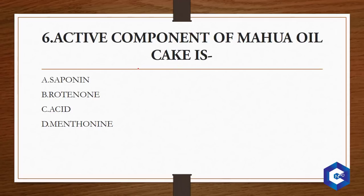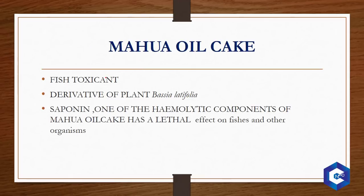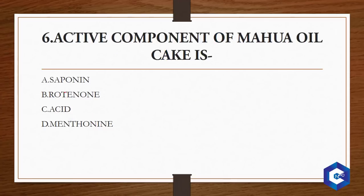What is the active component of Mahua oil cake? Mahua oil cake is a commonly used fish toxicant in fisheries, used to restrict weed fishes. It is a derivative of the plant Bassia latifolia. The active component present in Mahua oil cake is saponin, which has a lethal effect on fishes and other organisms. The answer is option A — saponin is the active ingredient in Mahua oil cake.